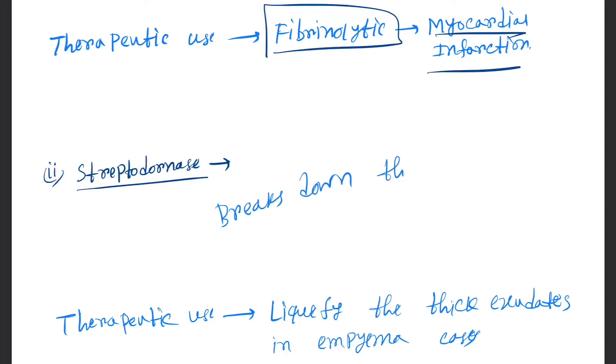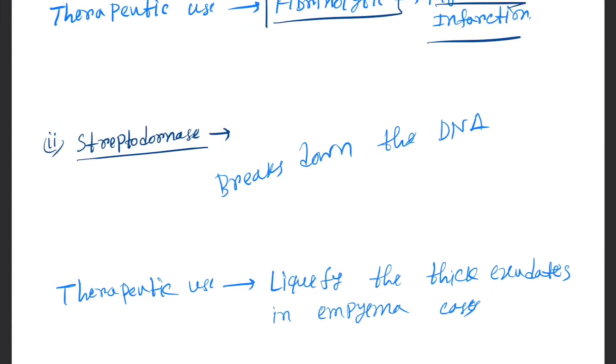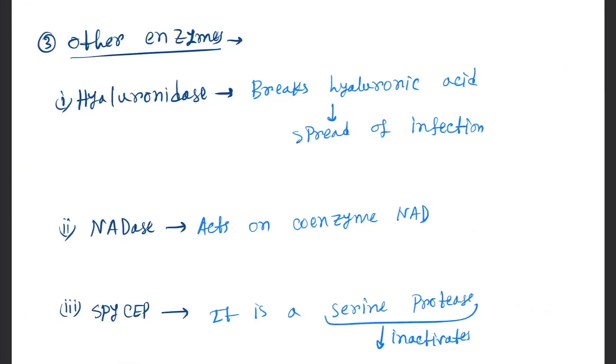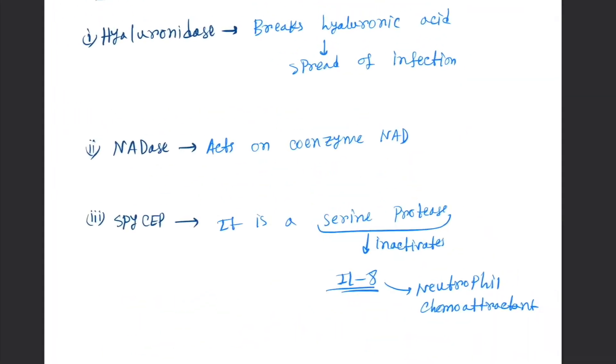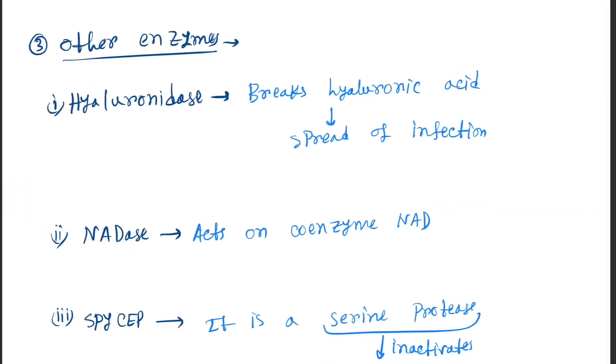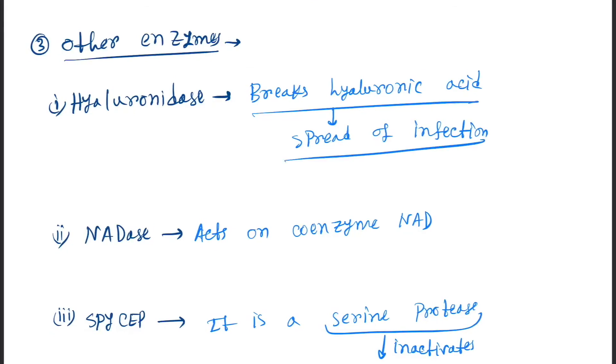Next is other enzymes which are toxins. First, hyaluronidase breaks the hyaluronic acid, spreads the infection. Next is NADase, acts on coenzyme NAD.